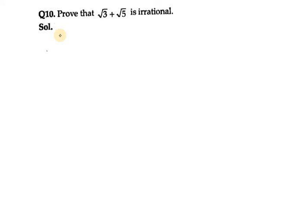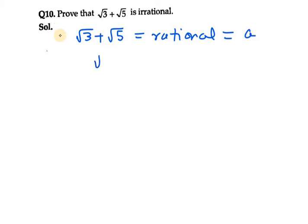Let's start with question number 10 of exercise 1.3. It says: prove that √3 + √5 is irrational. We need to prove this by contradiction, so we consider that √3 + √5 is rational and equal to some rational number a. So √3 + √5 = a.